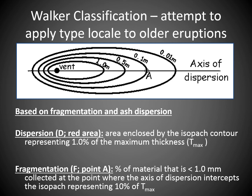Fragmentation is a measure of the explosivity of an eruption. Walker decided the easiest way to measure it is to look at the percent of material that is really fine at a certain distance — specifically where the deposit is one-tenth of the total maximum thickness. At that point A, he takes a sample of ash and measures what percentage is less than 1 millimeter. If it's spatter, you'll get almost none. If it's a Surtseyan eruption, it might be nearly all fine. This measurement spot keeps results consistent from eruption to eruption.